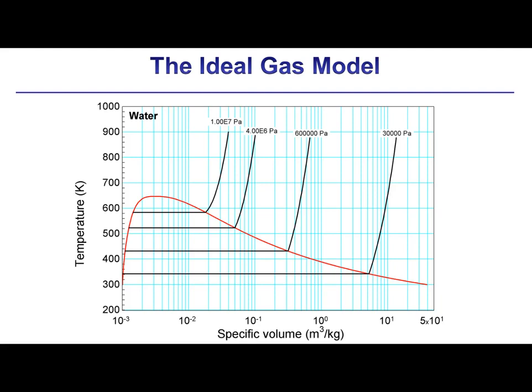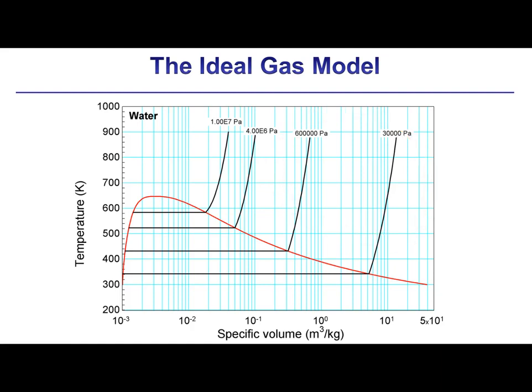The behavior of a gas approaches the ideal gas model as its specific volume increases, which occurs at low pressure and high temperature. The ideal gas model is computationally simple, and therefore it provides property information with little computational effort. There are many fluids in EES that can be modeled either as an ideal gas or as a real fluid, and the correct choice depends on the degree of accuracy that's required, as well as the conditions in the problem.